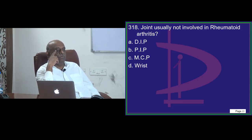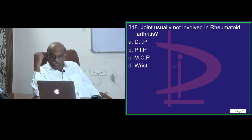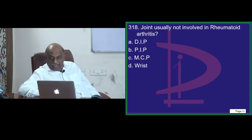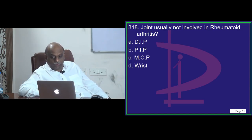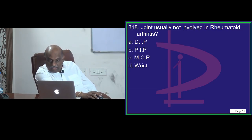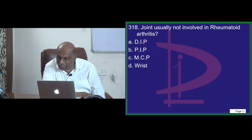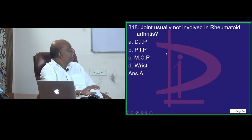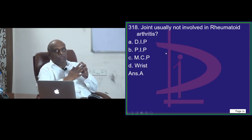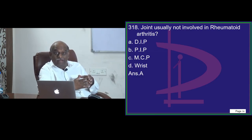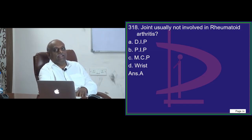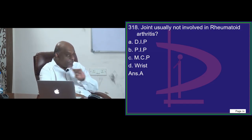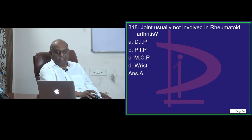Which joint is characteristically involved in osteoarthritis? Question 318. Nagarajan, you can't make such mistakes. DIP — distal interphalangeal joint — is involved in osteoarthritis and psoriatic arthritis, but not in rheumatoid arthritis. That is what you need to remember.